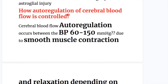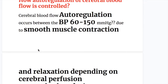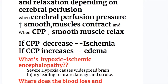How is autoregulation of cerebral blood flow controlled? Cerebral blood flow autoregulation occurs between blood pressures of 60 to 150 mmHg, due to smooth muscle contraction and relaxation depending on cerebral perfusion pressure. When cerebral perfusion pressure increases, smooth muscle relaxes. If cerebral perfusion pressure decreases, it causes ischemia; if it increases, it causes edema.